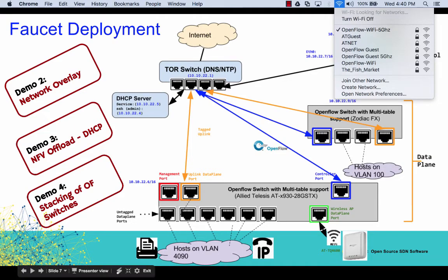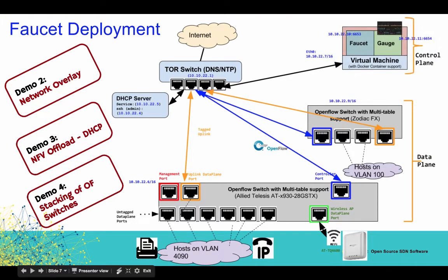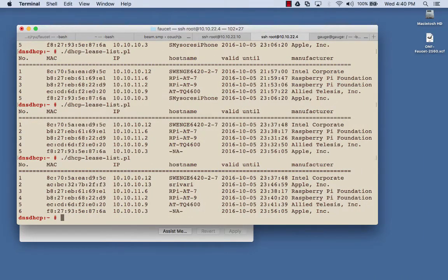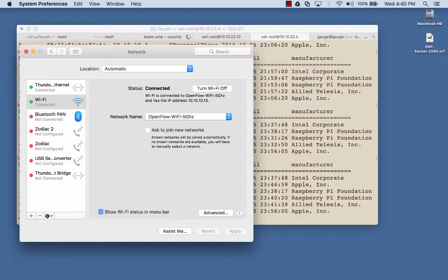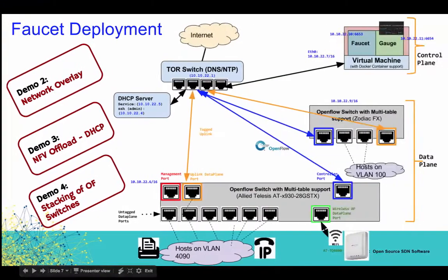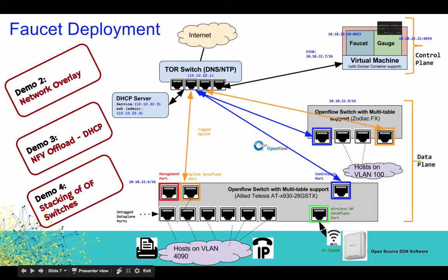I have connected via OpenFlow Wi-Fi 5 gigahertz — that's the network. I wanted to show you that I have connected and I have this IP address, which means this has actually been deployed in an OpenFlow network. That was what we wanted to really show as a network overlay, but it's very hard to demonstrate. Otherwise, you really have to deploy it yourself, and we can vouch that it actually works.